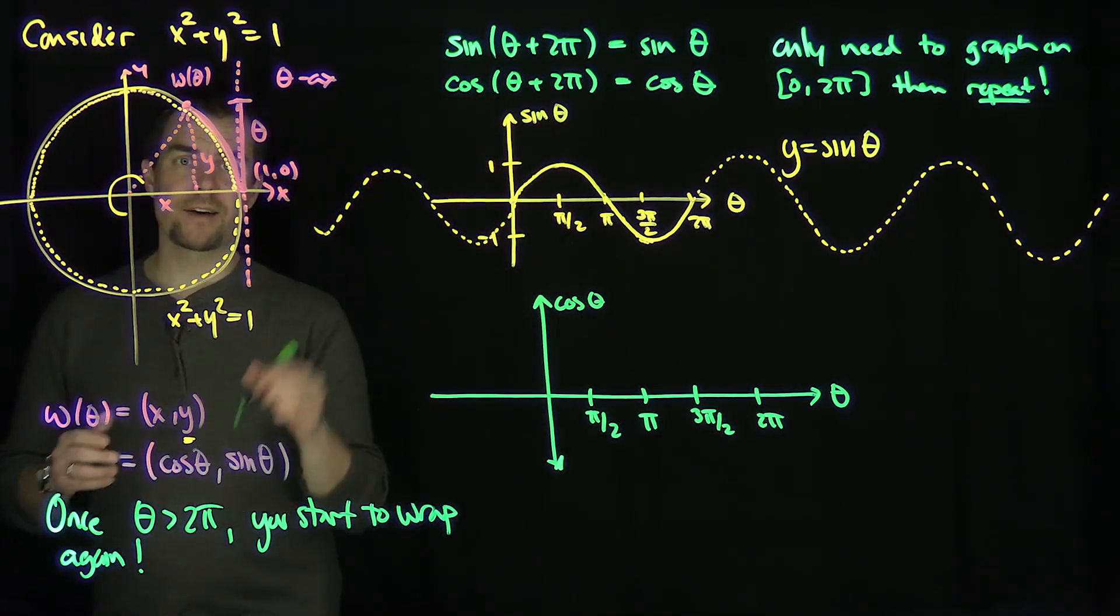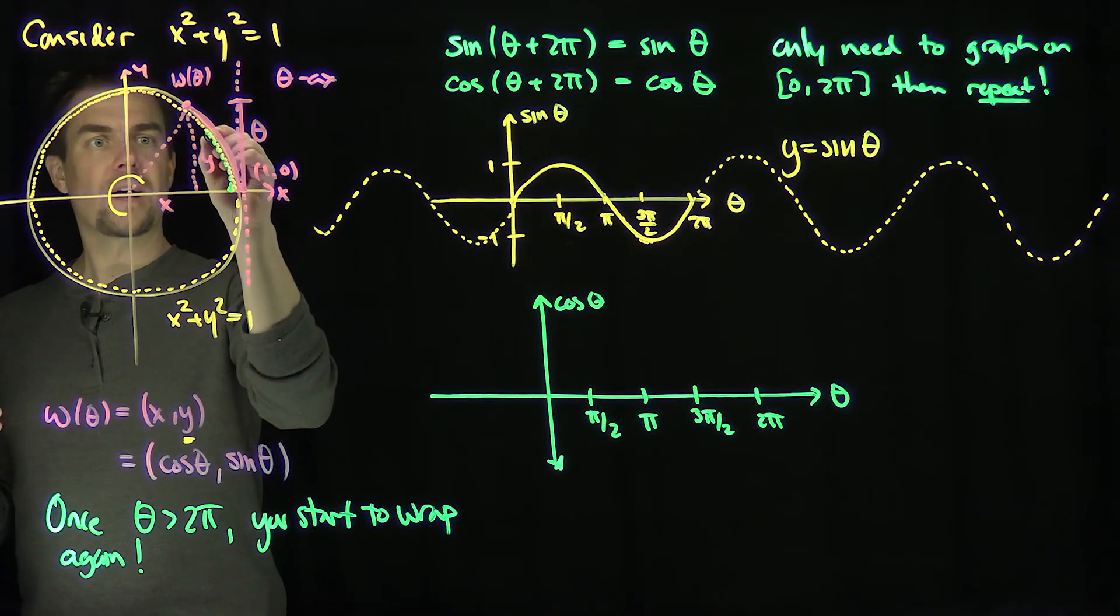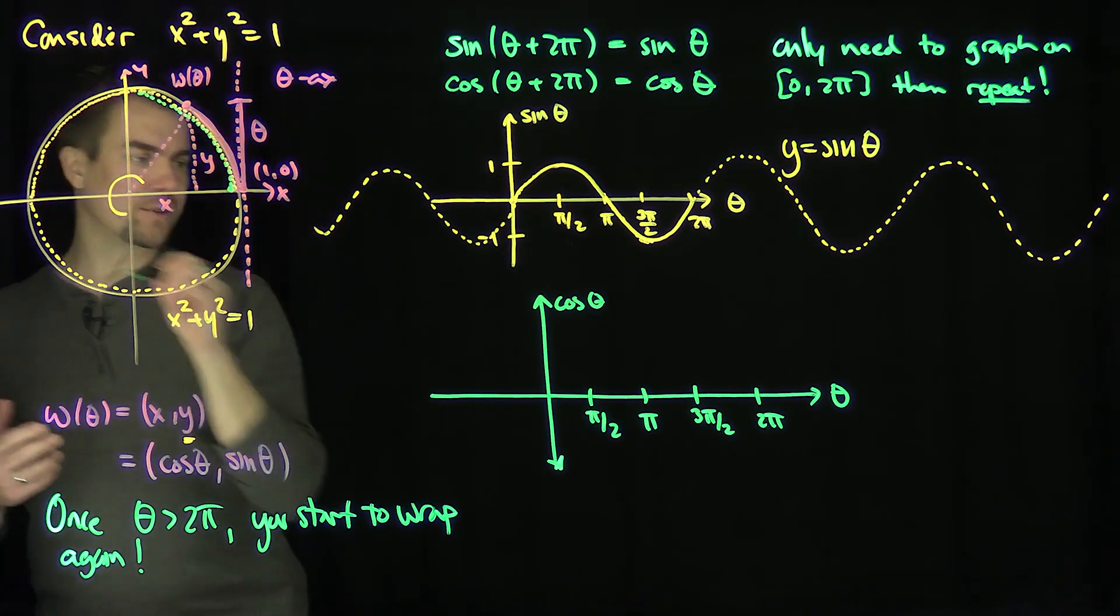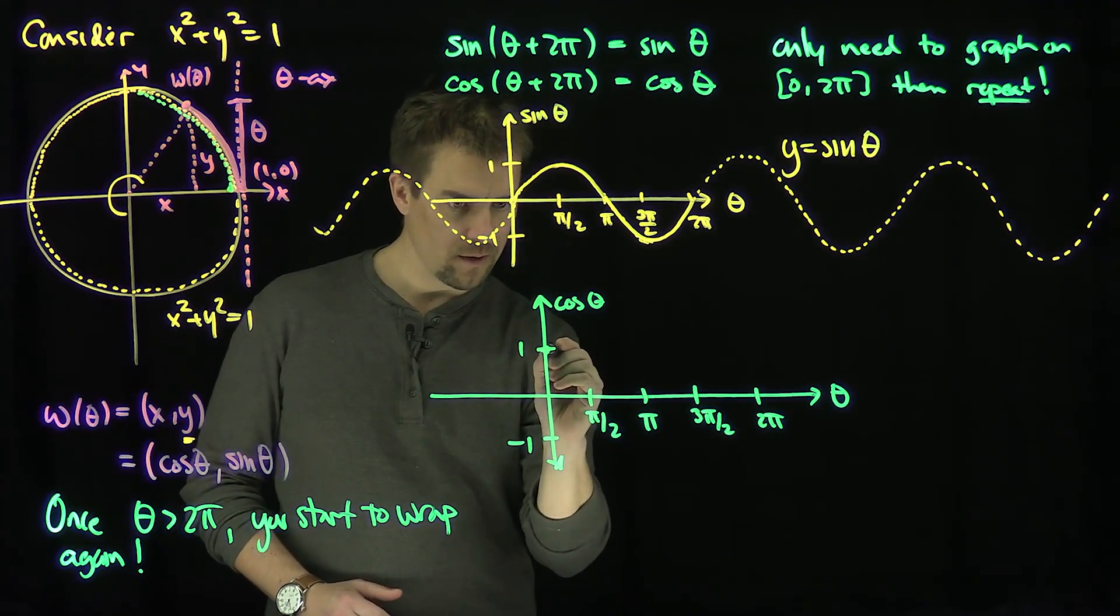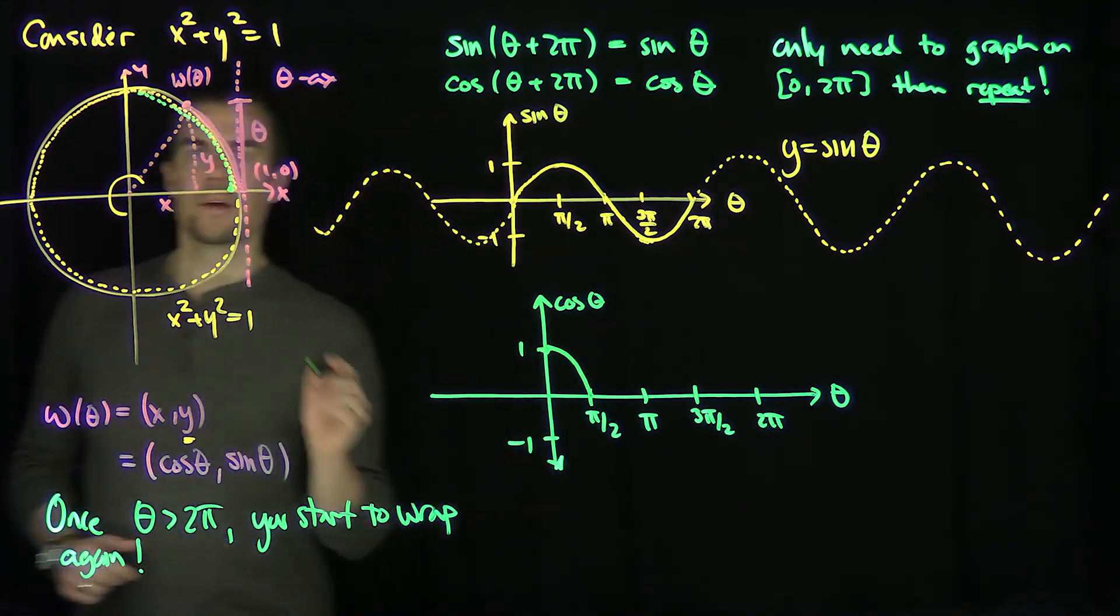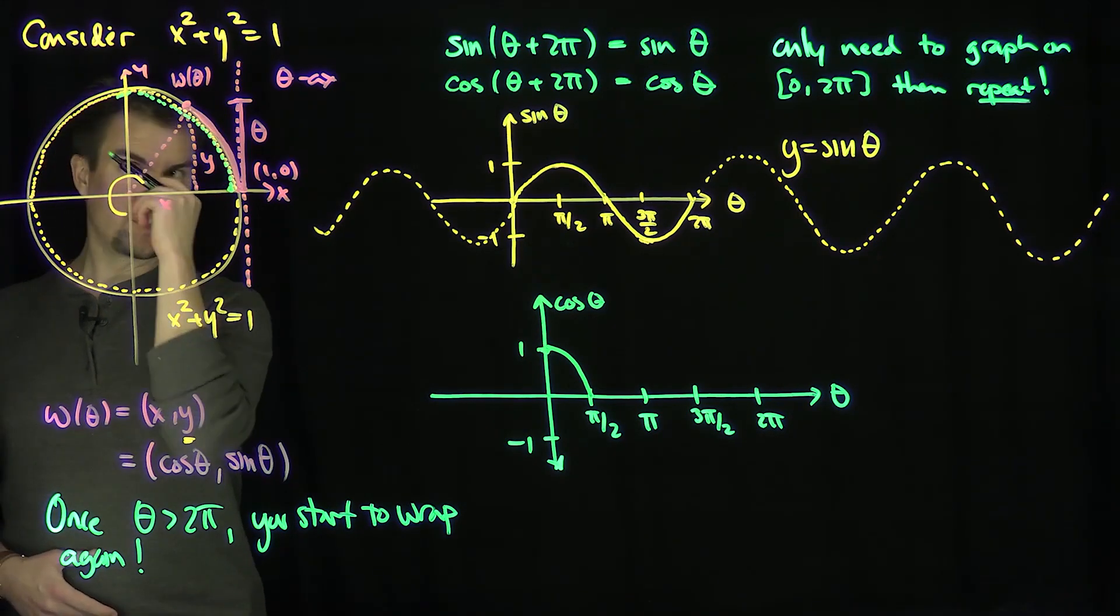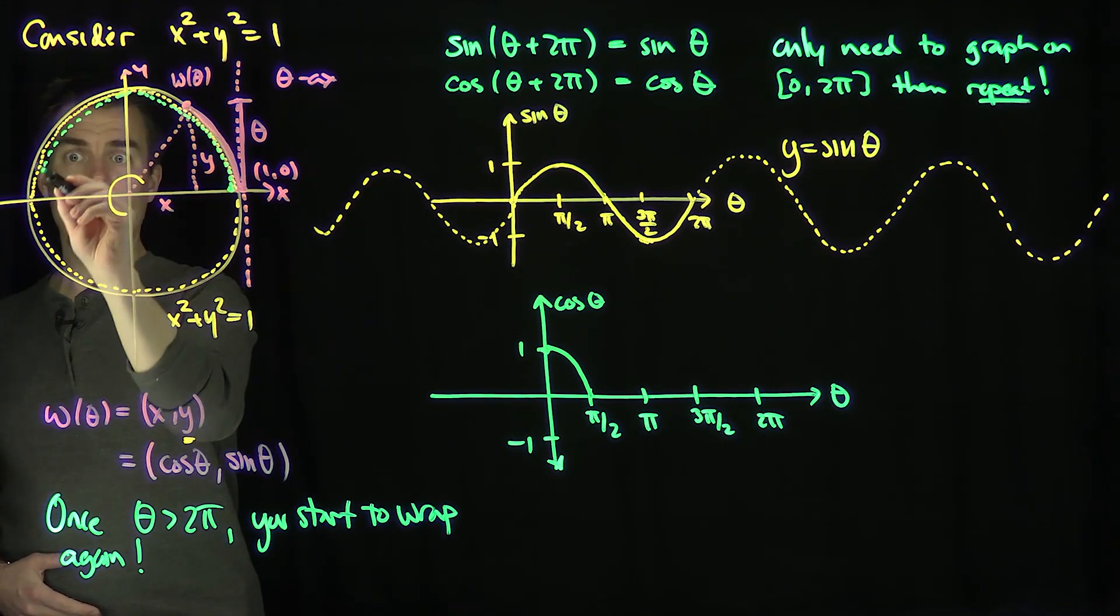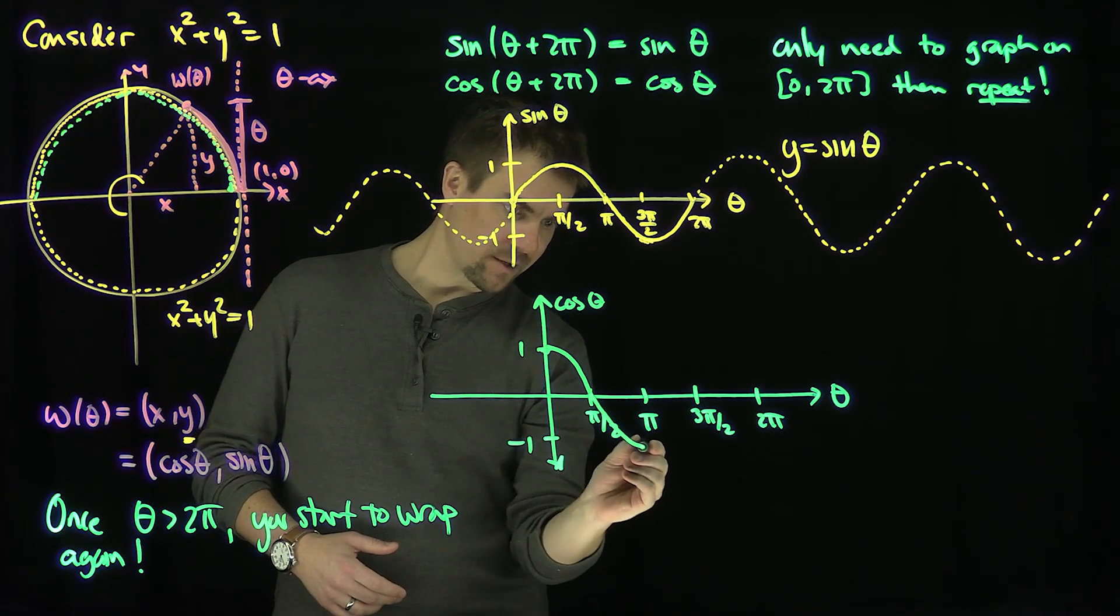Now remember the cosine is the x value. So the x value at 0 starts at 1. The x value starts at 1 and then goes to 0. So I'm going to start over here at the height of 1. There's 1 and there's negative 1. So I start at the height of 1 and I go to 0. And then the x value goes from 0 all the way down to negative 1. So I'm going to go from 0 down to negative 1.